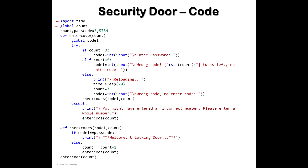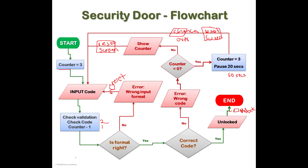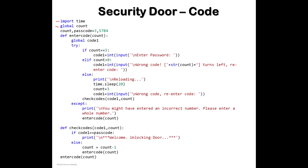Then we declare the global variable 'code_count'. In the flowchart we called it 'counter', but in the code I call it 'count' — it stores the number of chances left to enter the code. We initiate two variables: 'count' and 'passcode'. Count is a global variable set to 3 (three chances), and passcode is 5784 — that is the code we expect the user to enter.